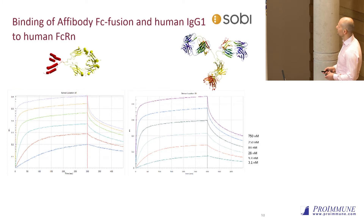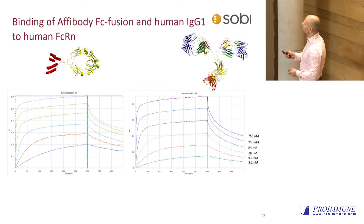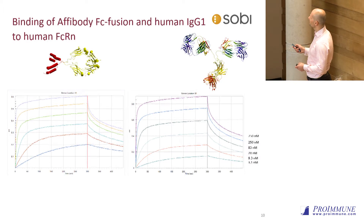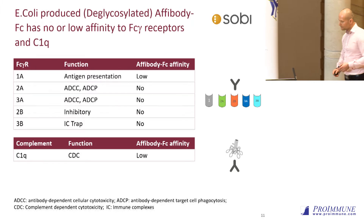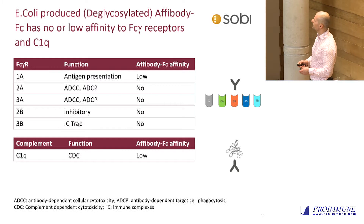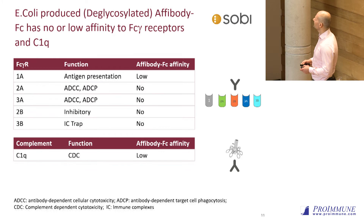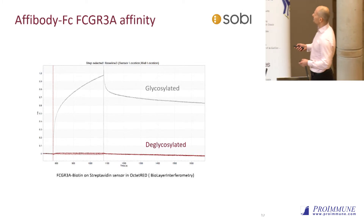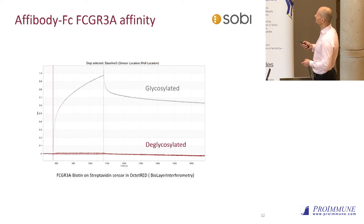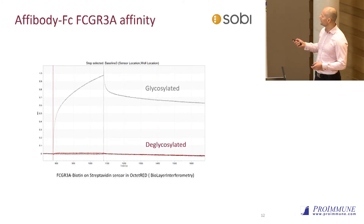Here's a biolayer interferometry analysis of an Affibody FC molecule compared to a full IgG — they look very similar in association and dissociation rates to FCRN. Then we look at all the FC-gamma receptors: 1A, 2A, 3A, 2B, 3B, and some variants of 3A, and also complement C1Q. We see that if we express glycosylated variants, they actually bind FC-gamma receptors quite efficiently. But if they are deglycosylated, they don't bind at all — so that's what we're looking for.